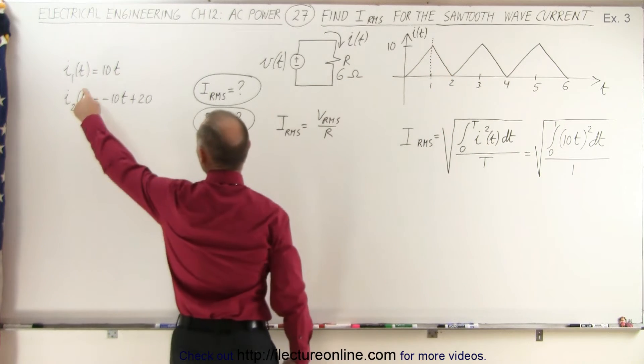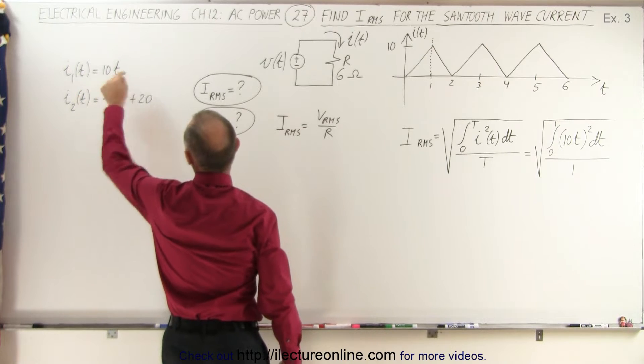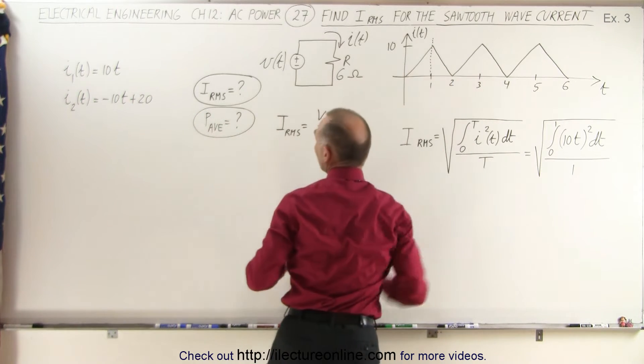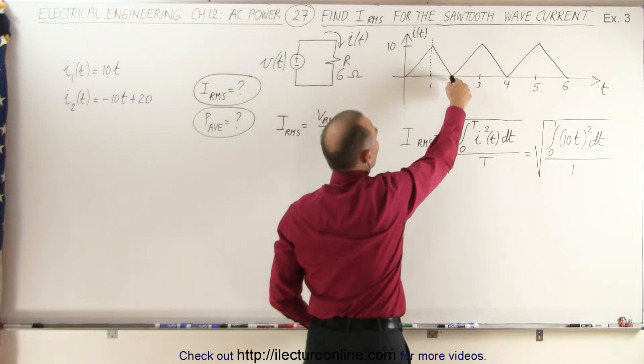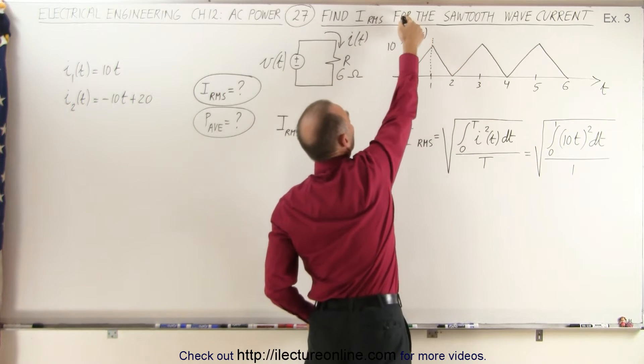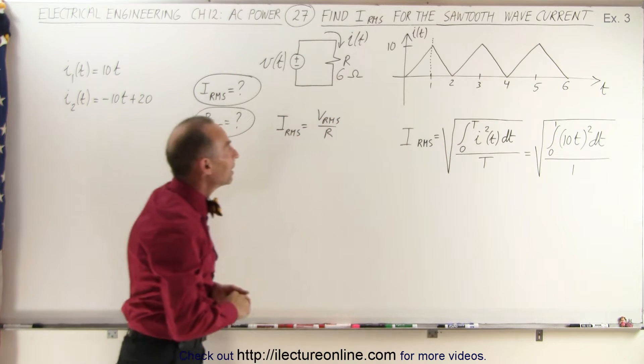The left slope can be defined by I1 = 10T, and the right slope by I2 = -10T + 20. Notice the slope is negative, and the intercept would happen at I = 20.